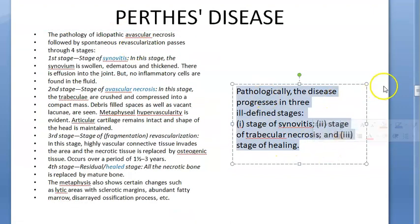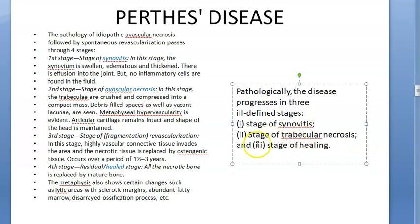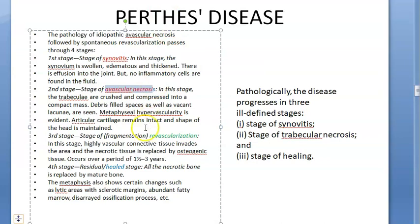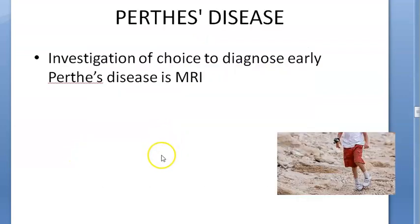Pathologically, there are stages: stage of synovitis, stage of avascular necrosis — during which the femoral head becomes flat (coxa plana), stage of revascularization, and stage of healing. During necrosis, a characteristic coral-form type of sequestrum is present.